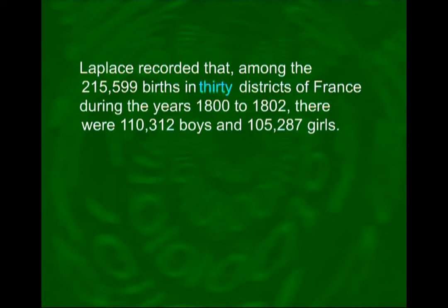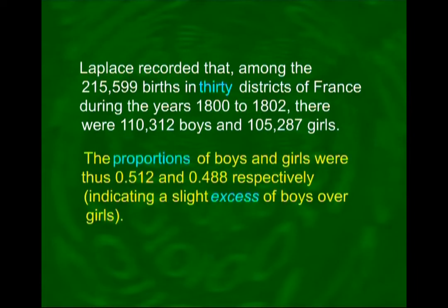Laplace recorded that among two lakh fifteen thousand five hundred and ninety-nine births in thirty districts of France during the years 1800 to 1802, there were one lakh ten thousand three hundred and twelve boys and one lakh five thousand two hundred and eighty-seven girls. The proportions of boys and girls were thus 0.512 and 0.488 respectively, indicating a slight excess of boys over girls.